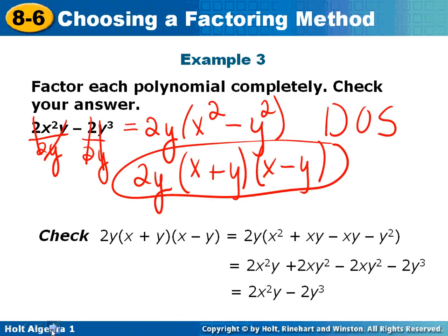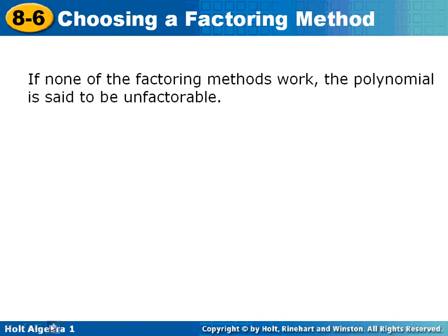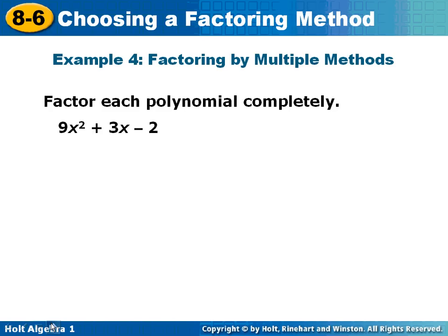Number 4. If none of the factoring methods work, then the polynomial is said to be unfactorable. This has three terms. I noticed that there is not a GCF in this problem. 9 is a perfect square. 2 is not a perfect square. So it's not a difference of squares, and it's not a perfect square trinomial.